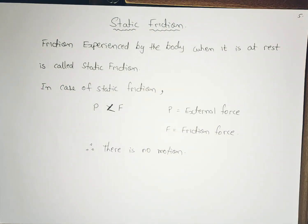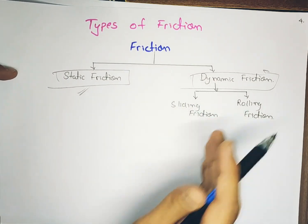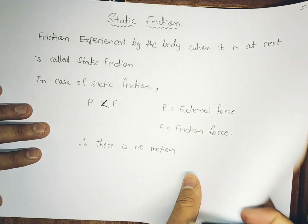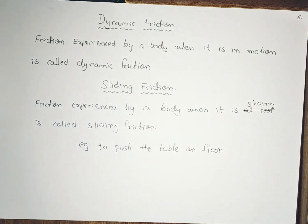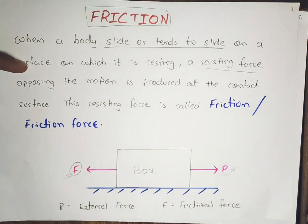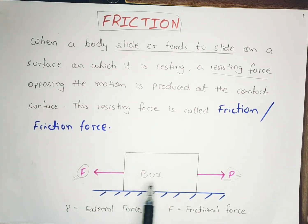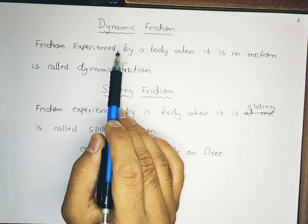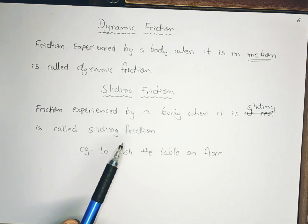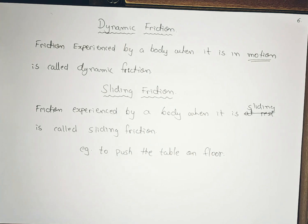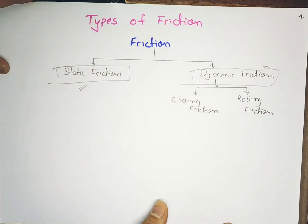Dynamic friction is the friction experienced by a body when it is in motion. When the box is moving, it also experiences a frictional force opposing our applied force — that is dynamic friction. If the body is at rest instead, the friction becomes static friction. Dynamic friction has two subtypes as per the flowchart: sliding friction and rolling friction.